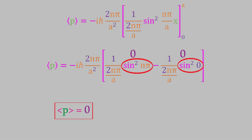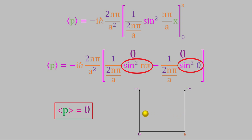Does that result make sense? Well, remember that momentum is a vector quantity—it has both direction and magnitude. Our result tells us that overall the average momentum is 0, because there's just as much likelihood that the system will be moving to the right as that it will be moving to the left. Since these two momenta will be opposite in sign, the average will be 0, and so our result is very reasonable.